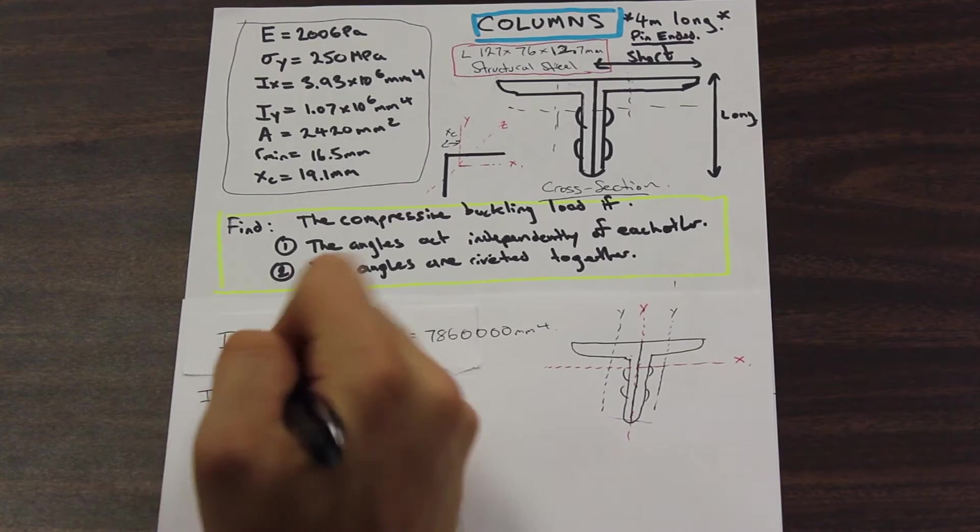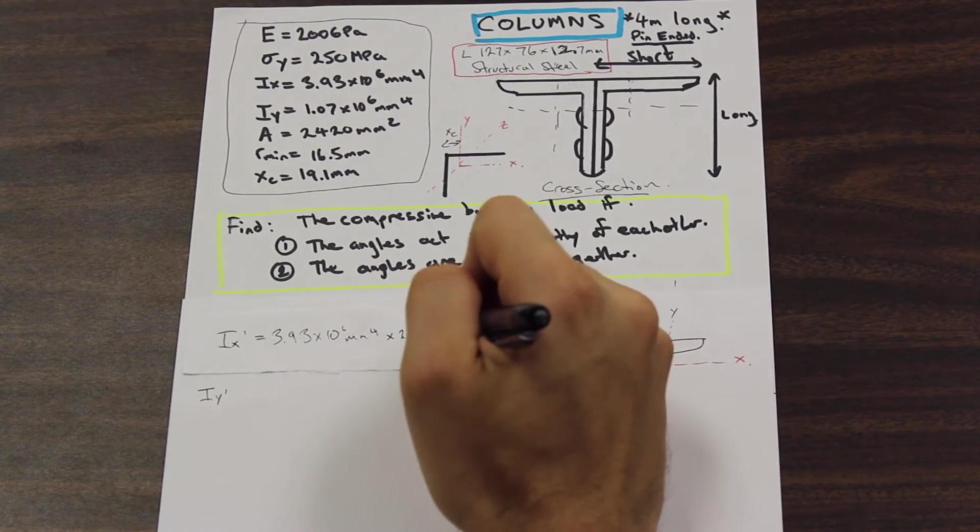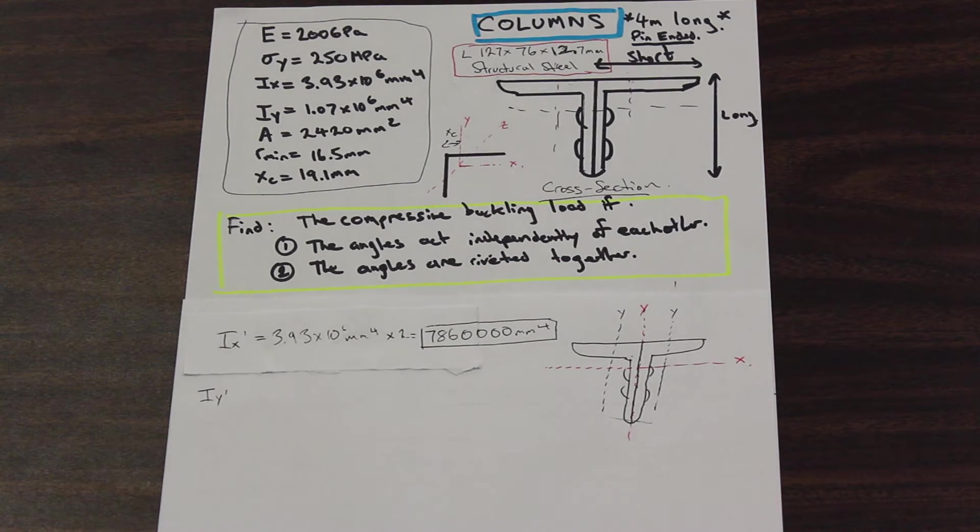Now let's find our I_y prime, and we're going to compare these two. The smaller one is going to be the one that we're going to use to determine the critical load, we explained that in the last video. So let's do it.